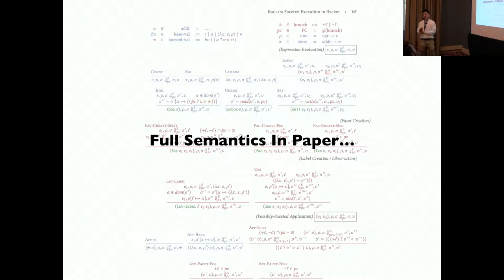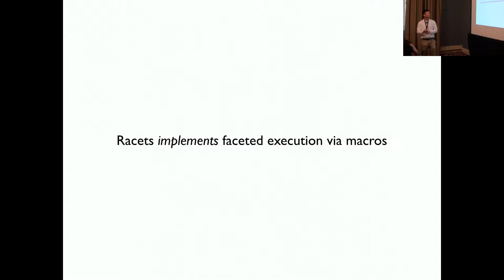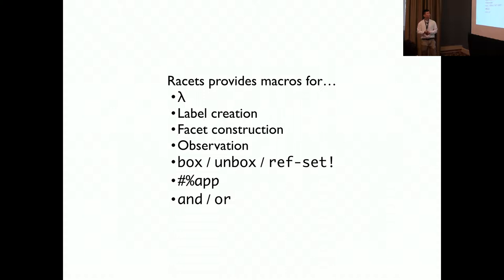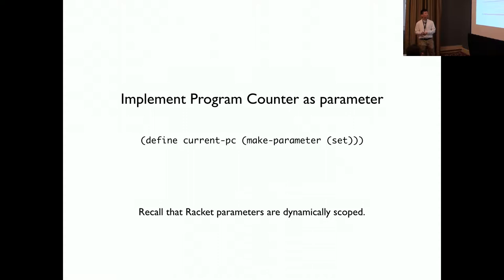How do we implement all of this? We basically use the full semantics of faceted execution. If you want to know all the details and all the semantics of faceted execution, you can check out the paper. RACIS implements faceted execution using Racket macros. And it also provides macros for lambda, label creation, basic construction, observation, reference, application, and if and all.